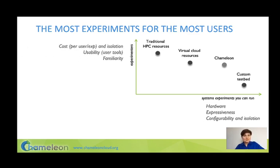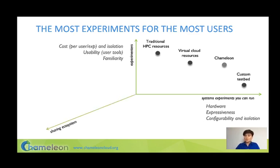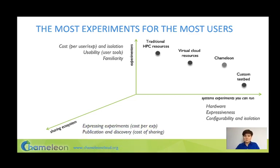On the user side, those factors are cost per user and experiment, as well as usability and familiarity that allow us to support the testbed for a very broad range of users. What we learned during operating the testbed is that there is in fact a third dimension that increases the efficiency of research: how well we can orchestrate sharing between our users. The factors that support that are how well you can package experiments and support their publication and discovery.